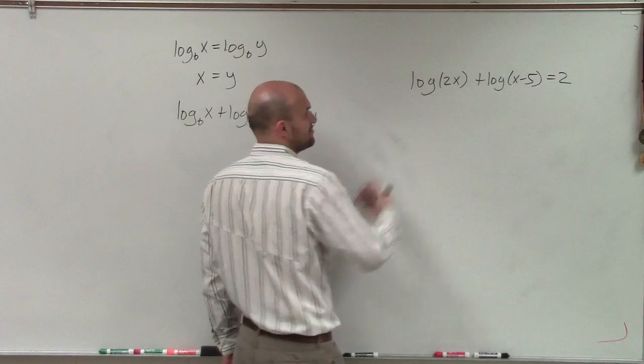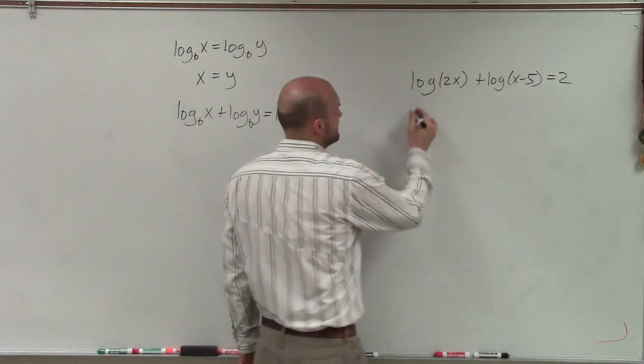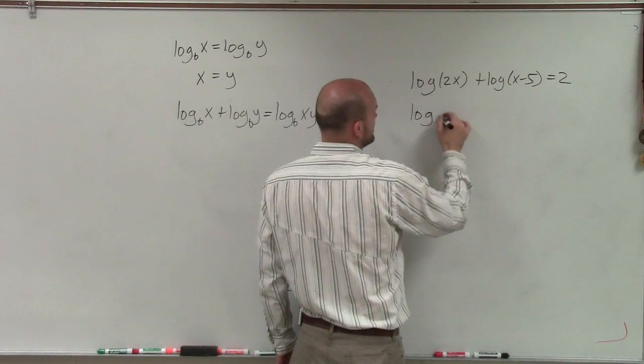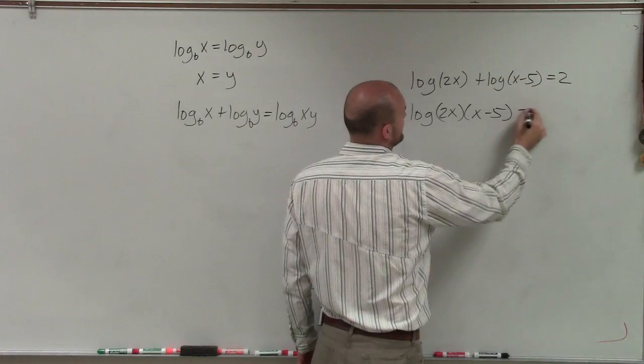I can rewrite these two logarithms. I believe they're both common logarithms, which means they both have a base 10. I can rewrite them as a single logarithm with the product of 2x times x minus 5. So if I write this as log of 2x times x minus 5 equals 2.